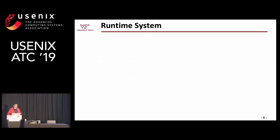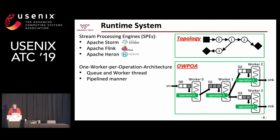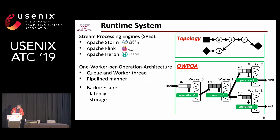There are modern stream processing engines for the cloud, such as Apache Storm, Apache Flink, and Apache Heron. Under the hood, they all use the one-worker-per-operation architecture: they assign a worker and a queue to each operation, the queues are connected in a pipeline manner, each thread gets data from its own queue, processes it, and puts the result into the destination queue. This has a back pressure mechanism.